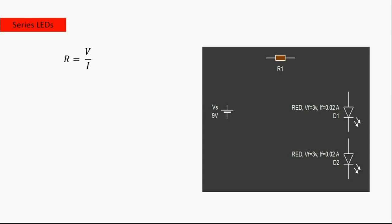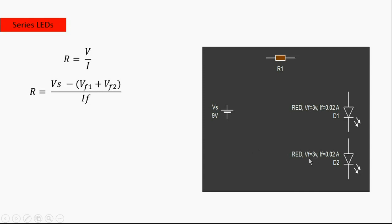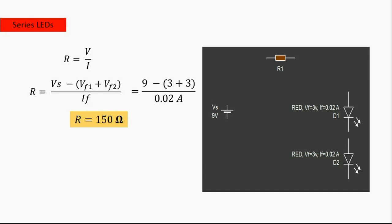Now, how do we calculate the resistor value for LEDs in series? First, we calculate the voltage across the resistor: Vs equals the supply voltage (9 volts) minus the sum of the forward voltages of the diodes — here, diode 1 is 3 volts and diode 2 is 3 volts. The forward current is 0.02 amperes. We can now calculate the resistor value, which for two series LEDs is 150 ohms.